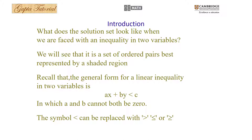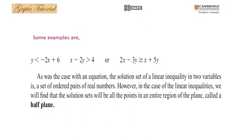The general form of a linear inequality in two variables is ax + by < c, where a and b cannot both be zero, and the symbol less than can be replaced with greater than, less than or equal to, or greater than or equal to. Some examples are: y < -2x + 6, x - 2y > 0, or 2x - 3y ≥ x + 5y.